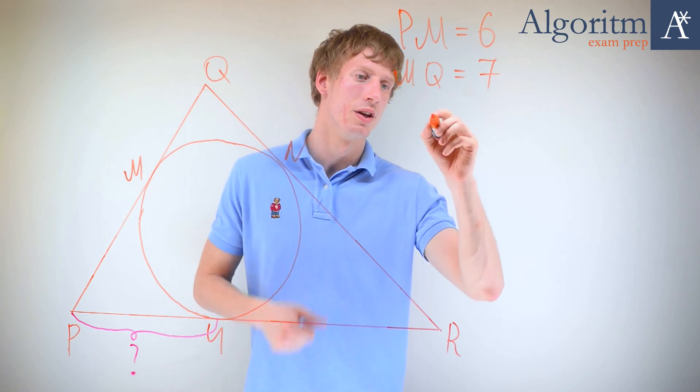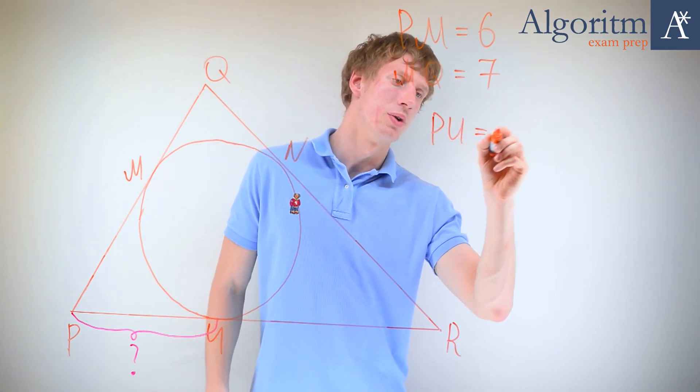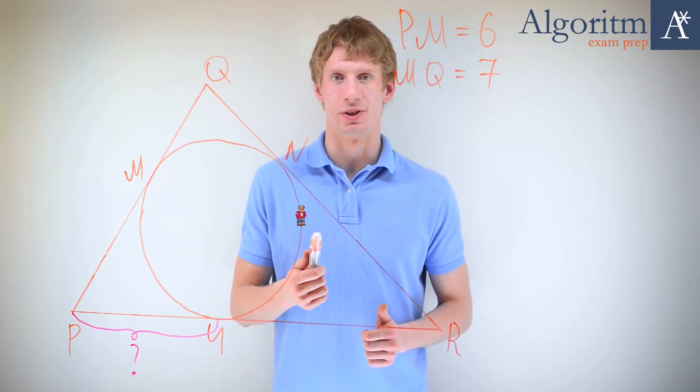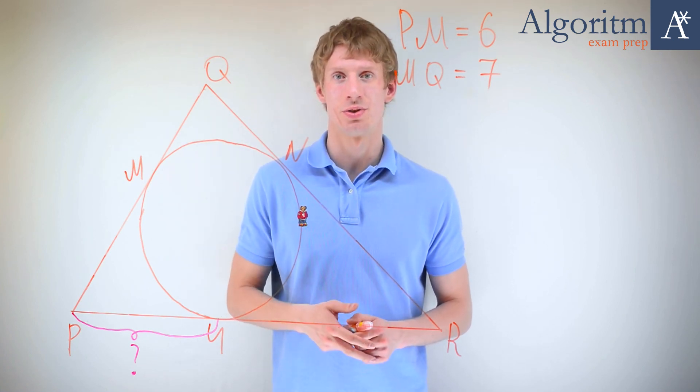Hence, PU equals 6. Now you can see that geometry is not that difficult. Ok guys, see you in class!